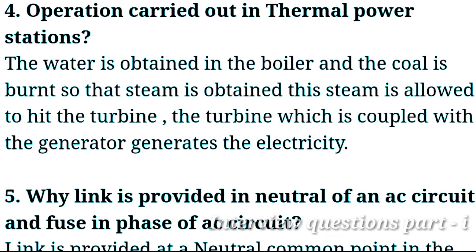The next question: what is the operation carried out in thermal power stations? In a thermal power station, water is heated in a boiler by burning coal so that steam is produced. This steam is directed to hit a turbine, and the turbine — which is coupled with a generator — generates electricity.